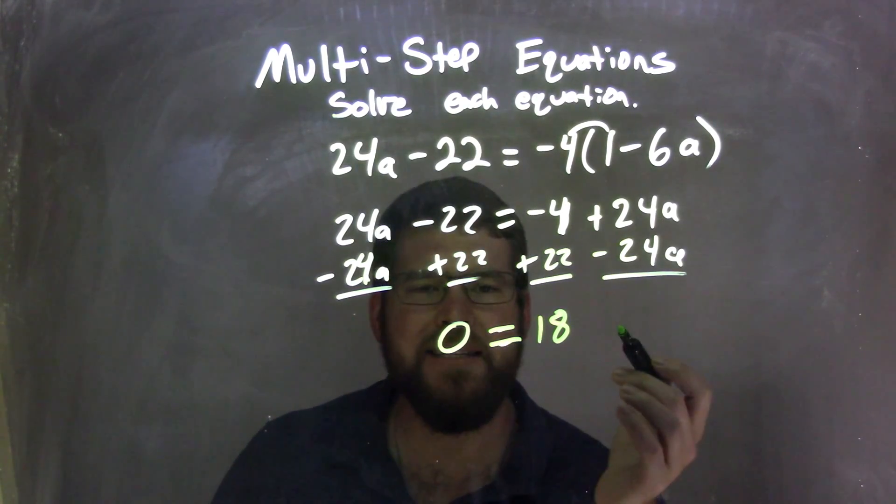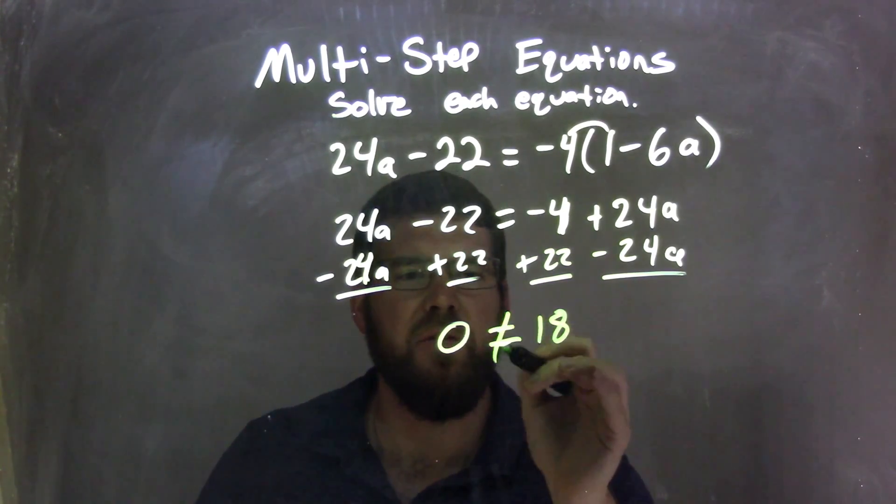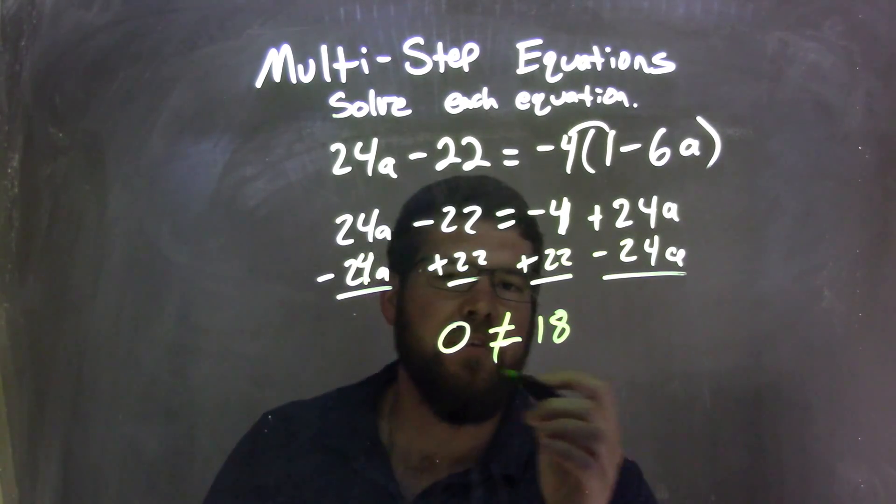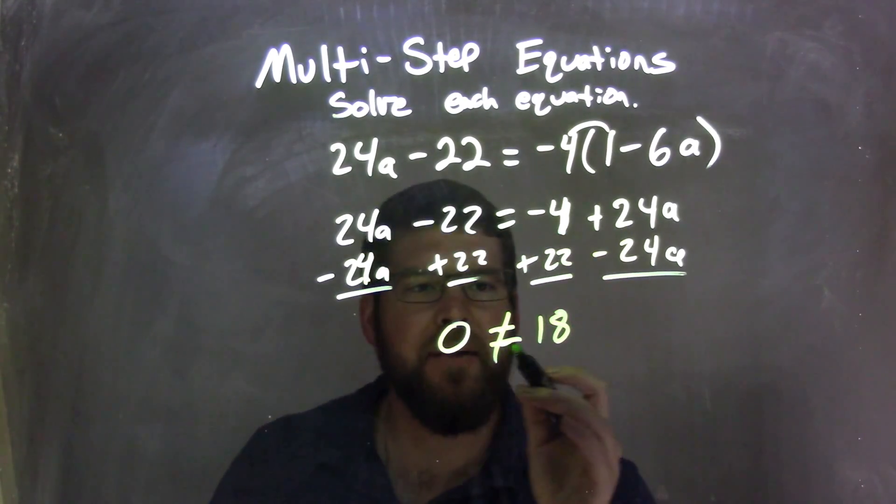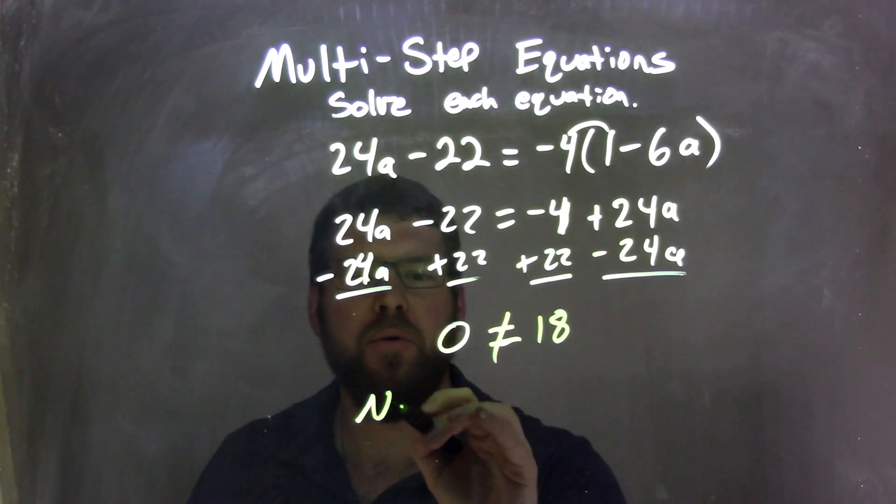Well, 0 does not equal 18, right? They're not equal. When that happens, when you have something that's not equal, a number not equaling another number, we have no solution.